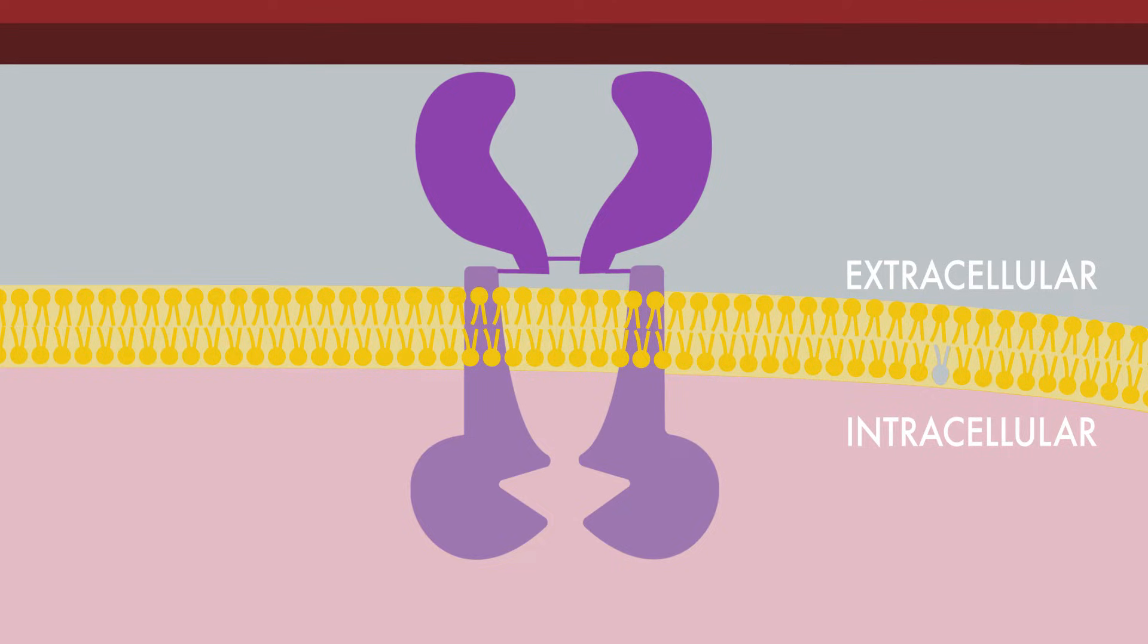Now we're going to go through the initial steps of the insulin signaling pathway. Insulin binds to the alpha subunits of the insulin receptor, which face the extracellular environment. This interaction translates to the beta subunits, which have tyrosine kinase domains that become activated to phosphorylate each other and other proteins.